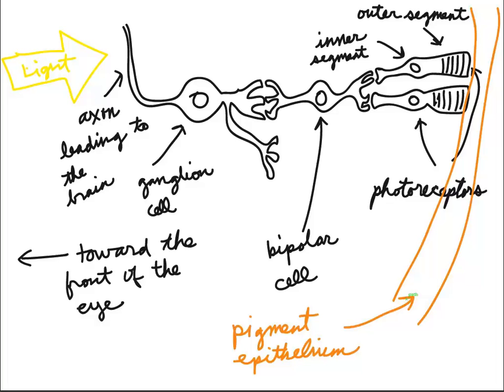If the ganglion cell fires, then we will have signals being sent along those axons, along the optic nerve, and back to the brain. Again, one other thing,